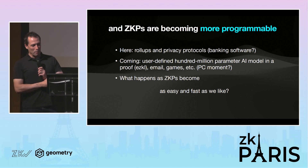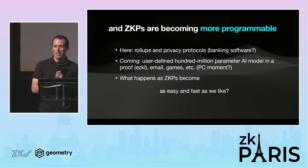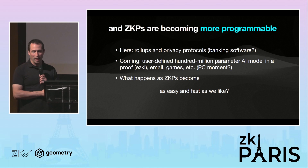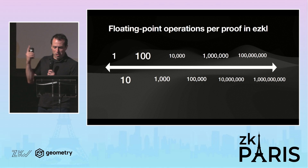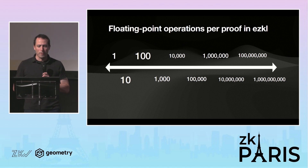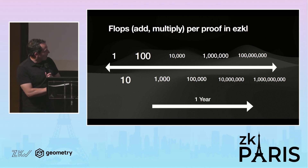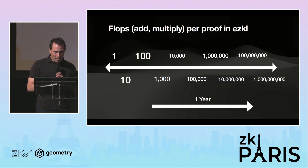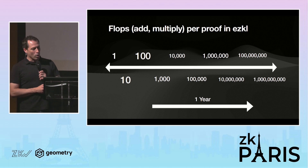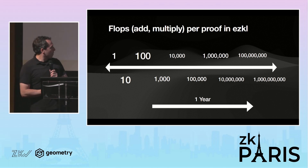I'd like to think about what happens as zero-knowledge proofs become not just pretty good but as fast as we could possibly desire. One way to measure that speed is execution speed, and another is floating-point operations per proof. We started out a year ago, and over the past year we've gone to where we can fit 100 million or so floating-point operations into a proof. That starts to enable qualitatively, not just quantitatively, different applications. Machine learning is one of them, but there are others you can imagine.